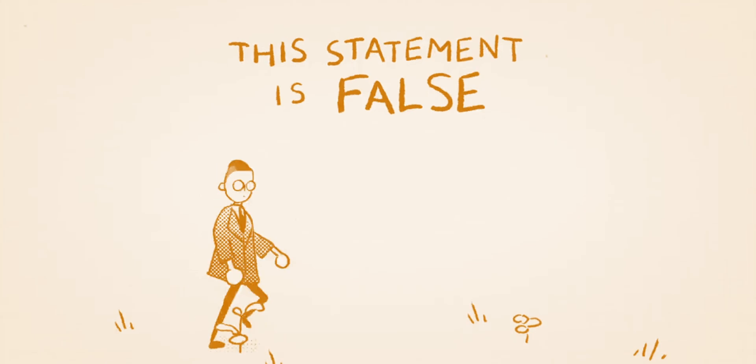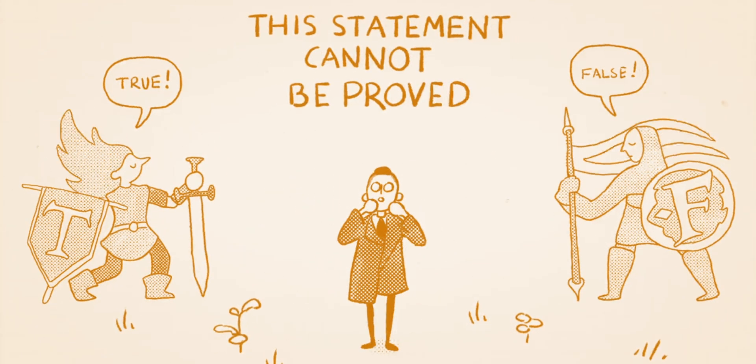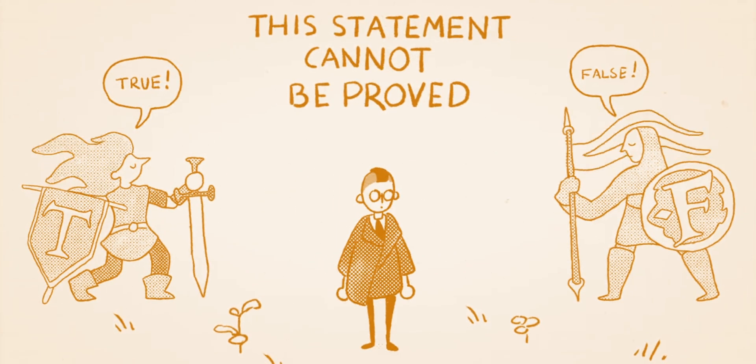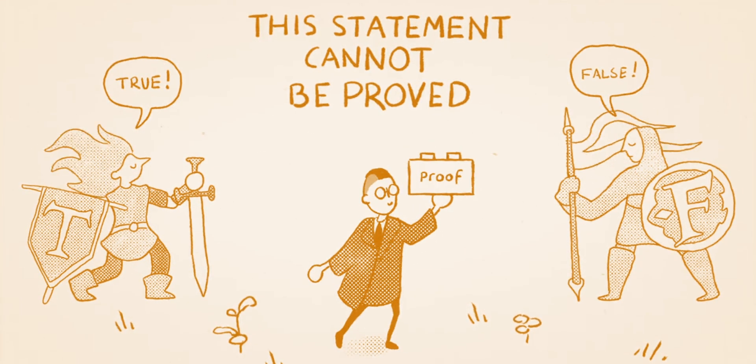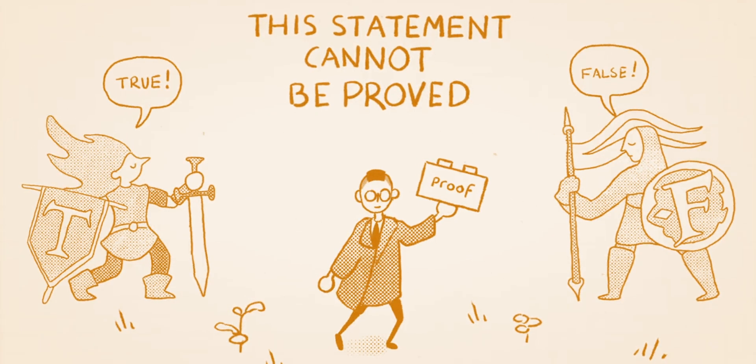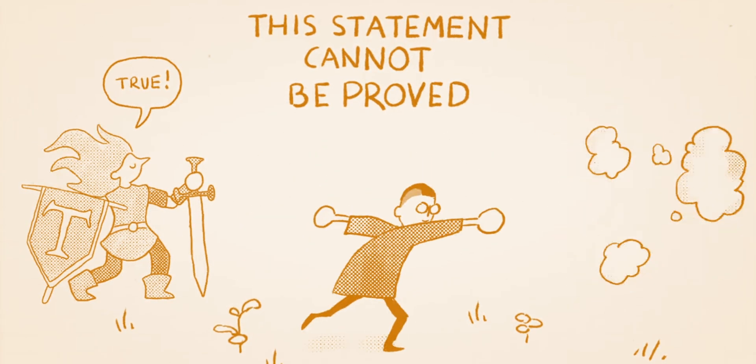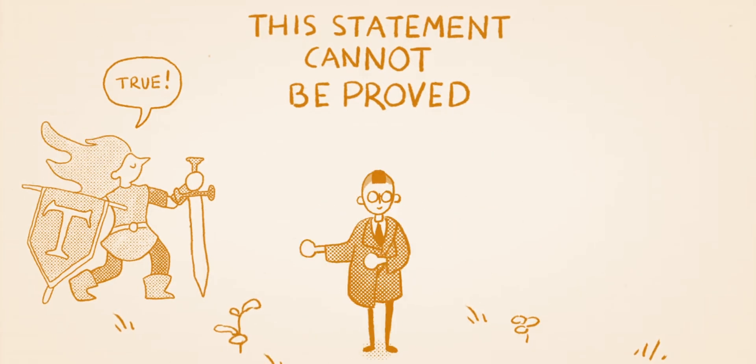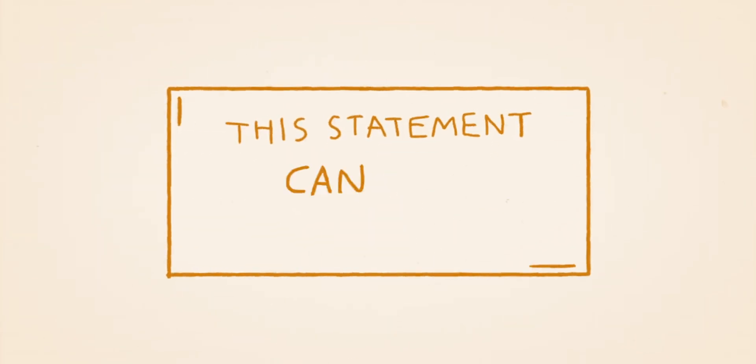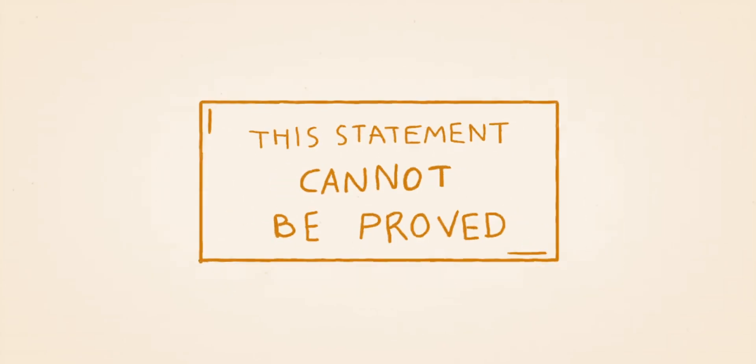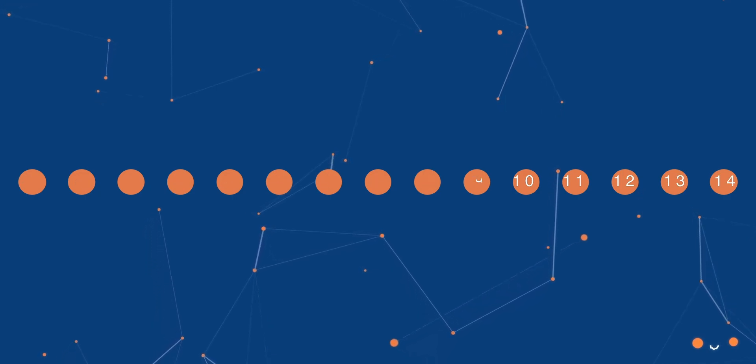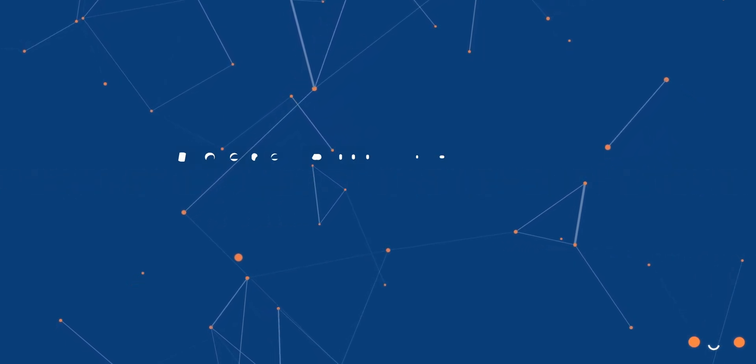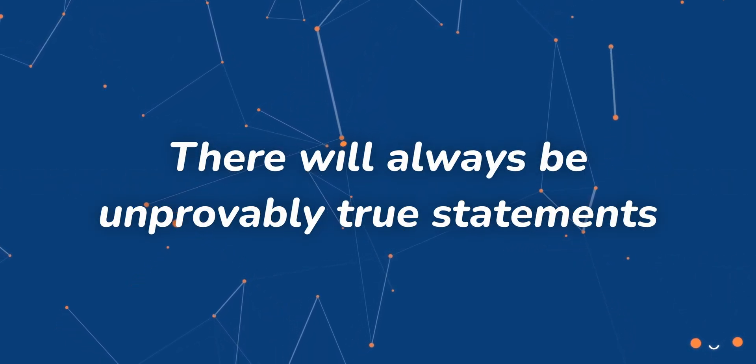However, unlike the ambiguous sentence that inspired him, mathematical statements must be true or false. So, which is it? If it's false, that means the statement does have a proof. But if a mathematical statement has a proof, then it must be true. This contradiction means that Gödel's statement can't be false, and therefore, it must be true that this statement cannot be proved. And by placing all mathematical statements on the same boundless number line, the answer to the first of the big three was revealed. There will always be unprovably true statements.